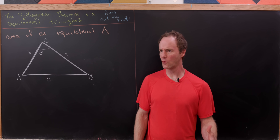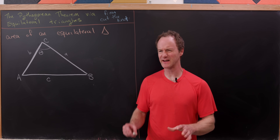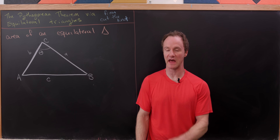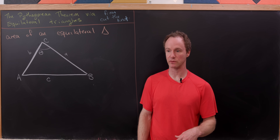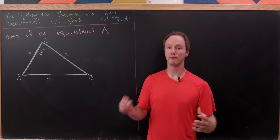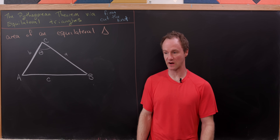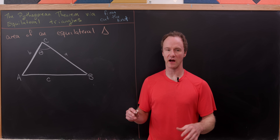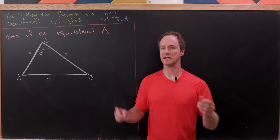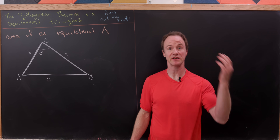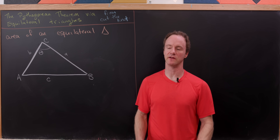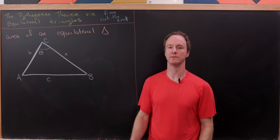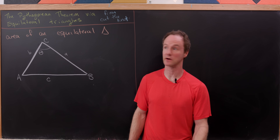Before we do that, I'd like to partially derive the area of an equilateral triangle. I say partially derive because to fully derive it easily, you actually need the Pythagorean theorem, and we're going to try to keep this from being circular.